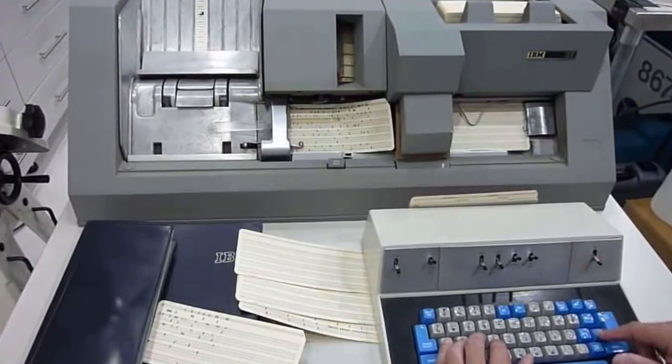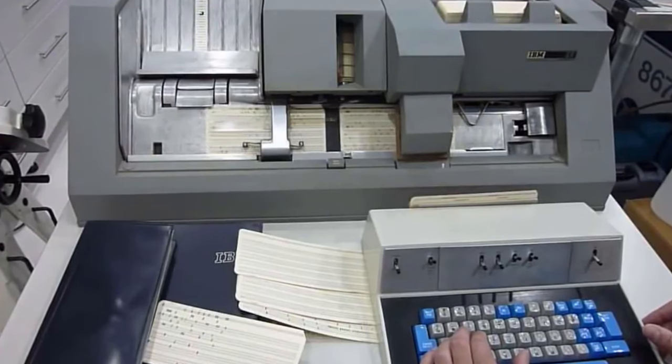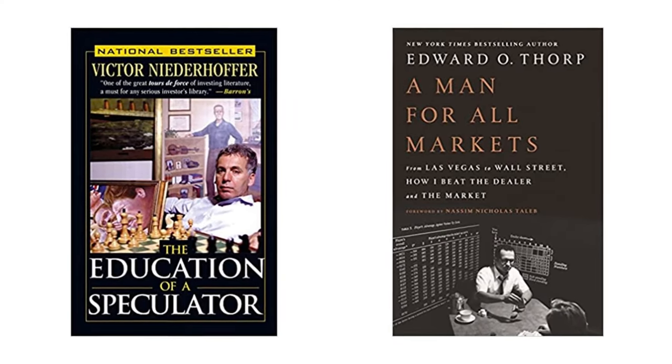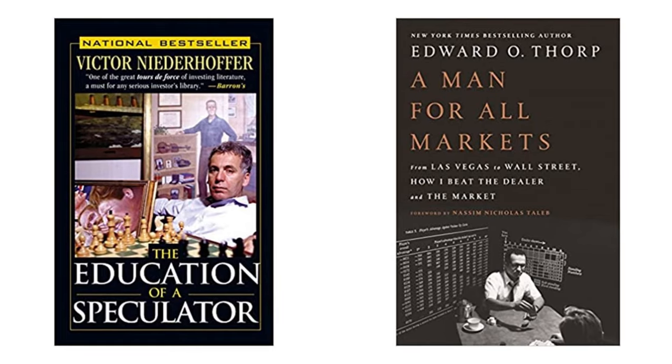Niederhofer left academia in 1972 to launch a quantitative hedge fund. These quant trading pioneers had strong backgrounds in statistics, along with access to computers and price data. They got their start around the same time that the efficient market hypothesis was becoming popular, but instead of accepting it as gospel, they did their own analysis. I'd strongly recommend reading both of their autobiographies, which not only demonstrate their way of thinking but are also really entertaining reads. Through the 1970s, these quant trading pioneers were amongst the top returning traders, but they still went largely unnoticed by Wall Street. They made outsized returns at a time when there were very few quant traders.